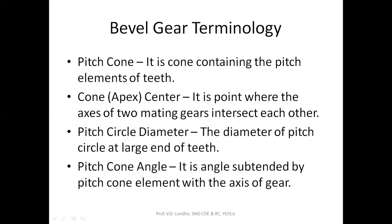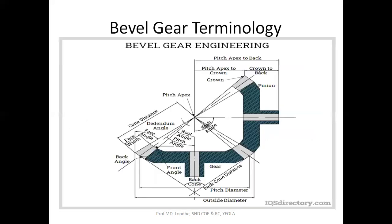Then pitch circle diameter — it is measured from the pitch circle at the large end of the teeth. This is the pitch circle diameter for the gear, and the same applies for the pinion. Measuring this distance gives us the pitch circle diameter for the gear and the pinion.